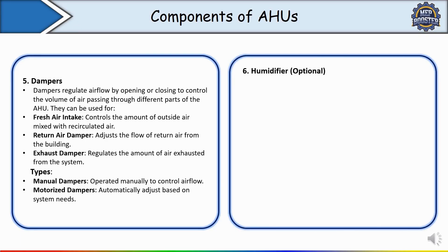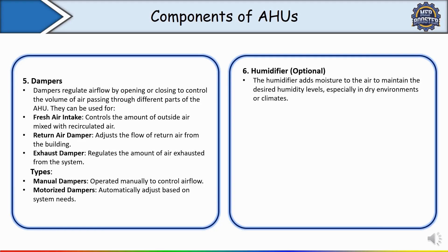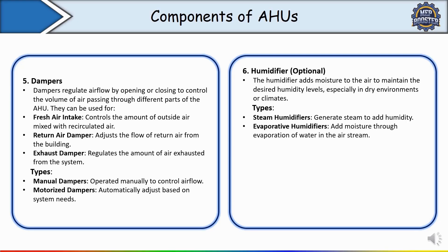The next component is the humidifier, which is optional. The humidifier adds moisture to the air to maintain the desired humidity level, especially in dry environments or climates. When designing or sizing an AHU for a dry climate, a humidifier is generally installed. Types include steam humidifiers, which generate steam to add humidity, and evaporative humidifiers, which add moisture through evaporation of water in the air stream. In a museum, the AHU humidifier maintains appropriate humidity levels to protect artwork and artifacts from drying out or cracking.